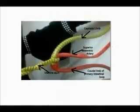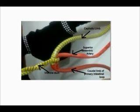The loop has the cephalic and caudal limbs. The cephalic limb of the loop develops into the distal part of the duodenum, the jejunum, and part of the ileum. The caudal limb becomes the lower portion of the ileum, the cecum, the appendix, the ascending colon, and the proximal two-thirds of the transverse colon.